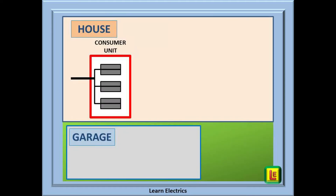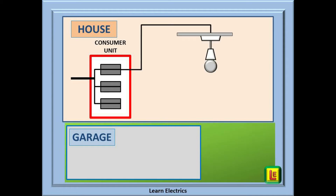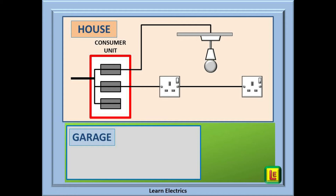We're going to keep our drawings very simple and basic today, as this will help in the explanation. Let us imagine a typical domestic installation — a house with a detached garage. You have just installed a consumer unit onto the incoming supply and your task now is to first and second fix the property. Let's put in a lighting circuit and a socket circuit. We could also have shown the cooker circuit, the water heater circuit, etc., but for clarity we have left them off.